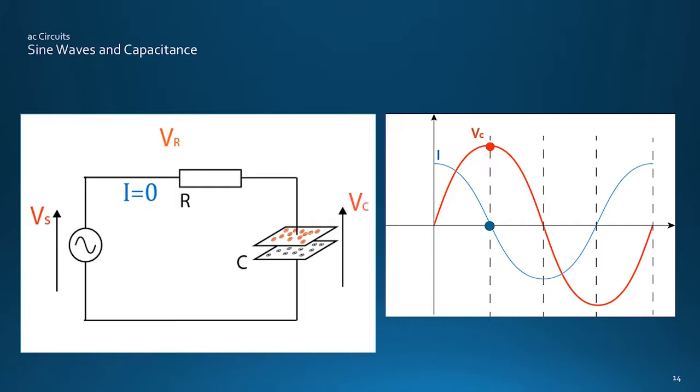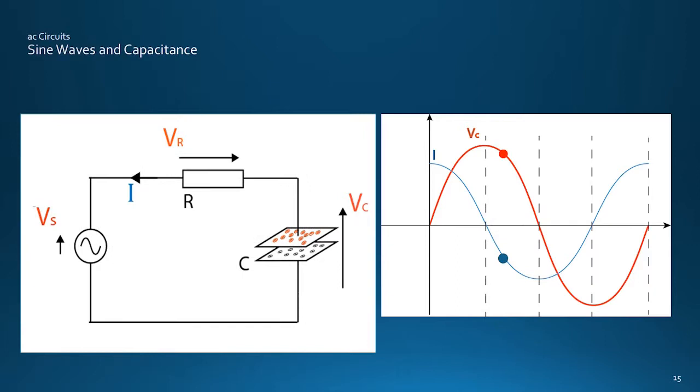Until it builds up sufficiently to match the applied voltage, which brings the flow of current to a stop, with no volt drop across the resistor. At this point of maximum voltage Vc, there is maximum energy stored in the electrostatic field, between the positive and negative charges that have been forced together.